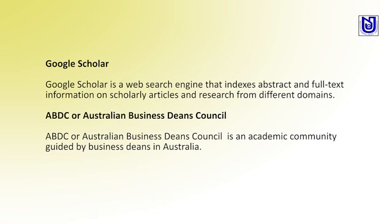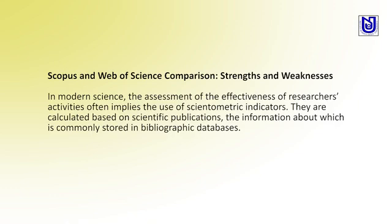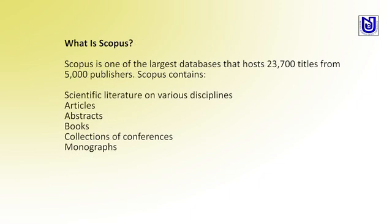ABDC, the Australian Business Deans Council, is an academic community guided by business deans in Australia. Scopus and Web of Science are coupled with their own strengths and weaknesses. In modern sciences, the assessment of effectiveness of researcher activities often implies the use of scientific indicators calculated based on scientific publications, which are commonly stored in virtual databases. Web of Science covers title, publications, and author information. Scopus is also an online source covering books, collections, and proceedings. These are all covered by Web of Science and Scopus.